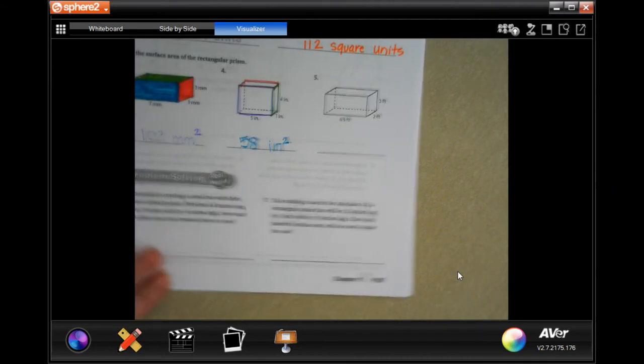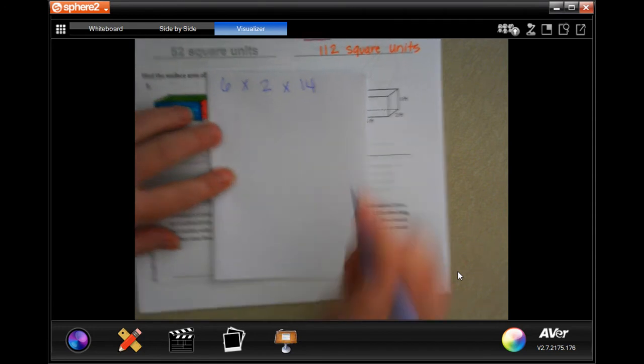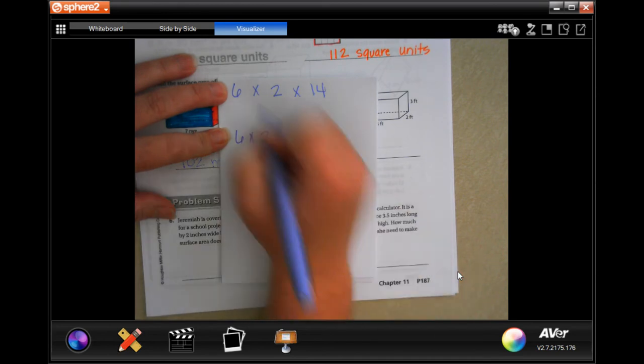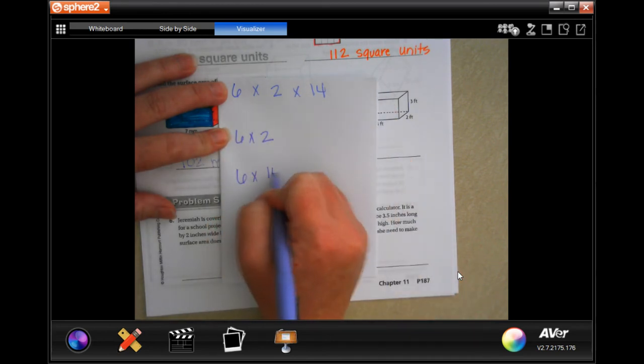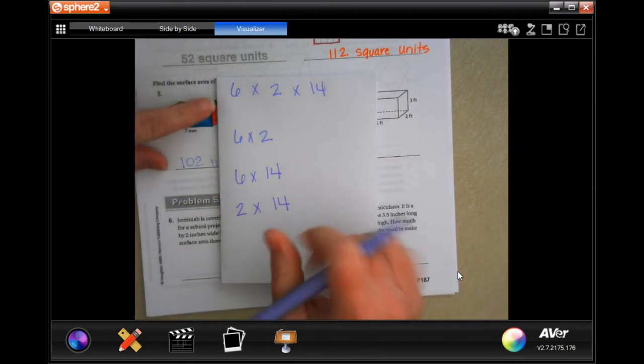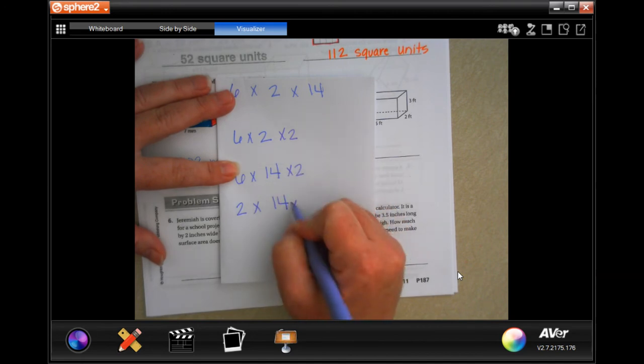You guys can't see that, sorry about that. So I'm going to let you guys go ahead and do number five. We're going to go down and do number six. And it says, Jeremiah is covering a cereal box with fabric for a school project. So, it's six by two by 14. Six by two, six by 14 are the original dimensions. So, we have to do six by two. We have to do six by 14. And then we have to do two by 14. So this is how to do it when you don't have the box sitting in front of you. And there's two of each one of those sides.